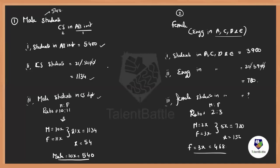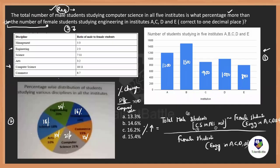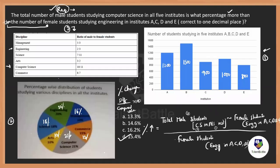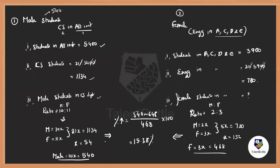Finding the percentage more: percentage increment is (540 − 468) / 468 × 100. The compared value is the female students, which is 468. When you solve this you get the answer as 15.38%, which is option T. I hope that question is crystal clear. I've explained in detail step by step. This clears the way of solving data interpretation questions in the TCS format.